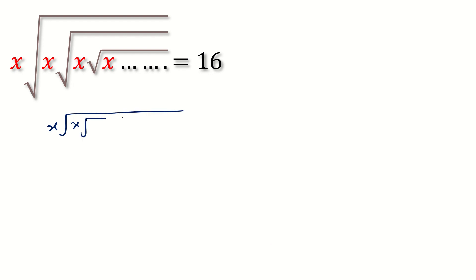Here, x square root x square root x square root x, and it goes to infinite, will be equal to x square root 16. Because this part goes till infinite, we can replace it with 16. We can write this as x square root 16 equals 16.